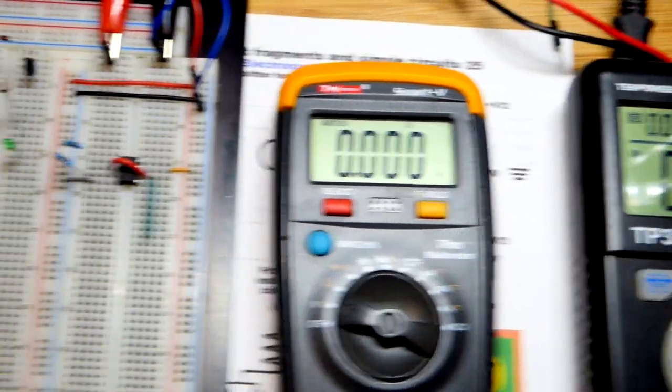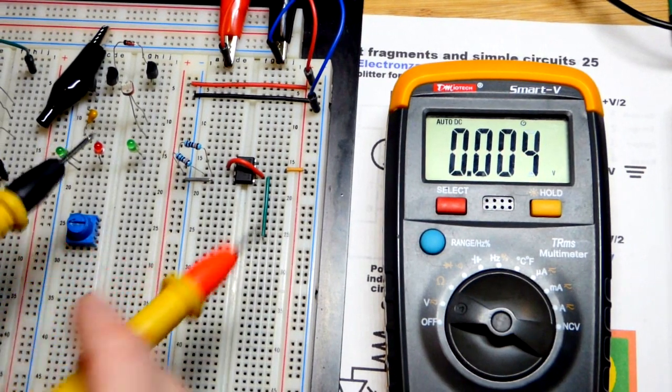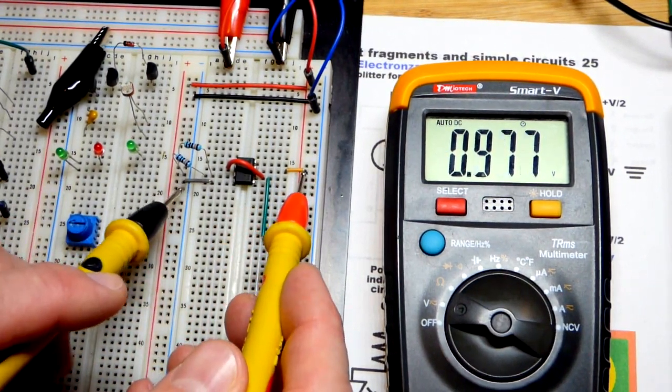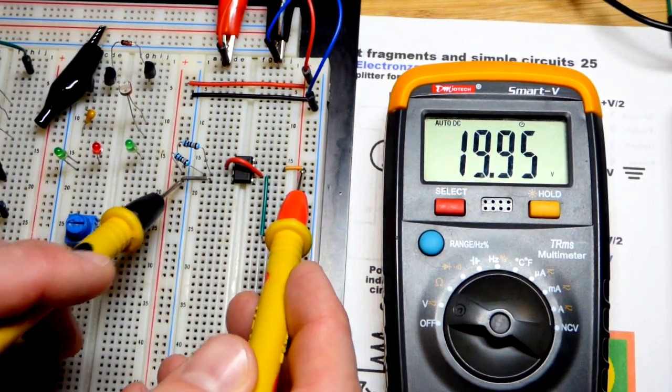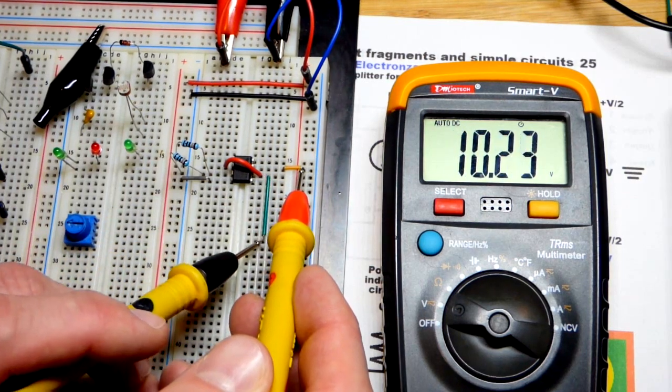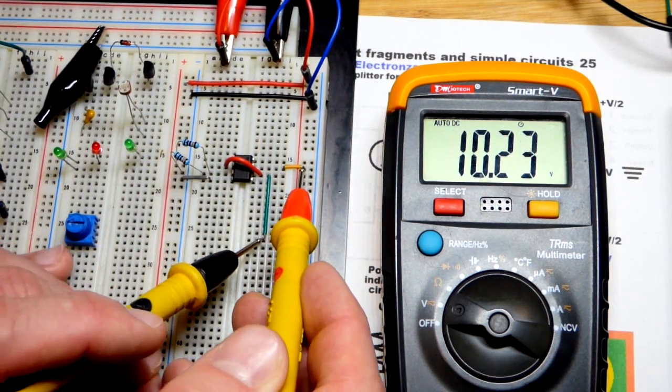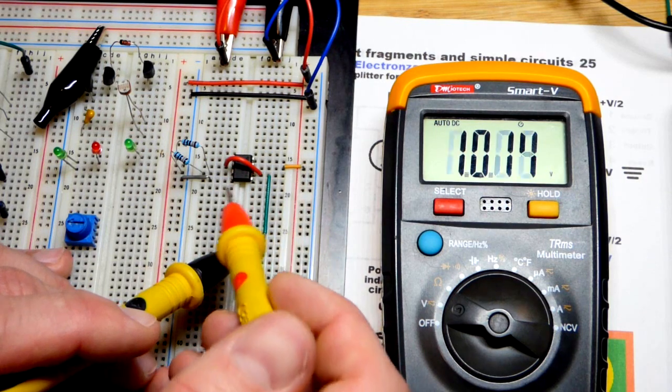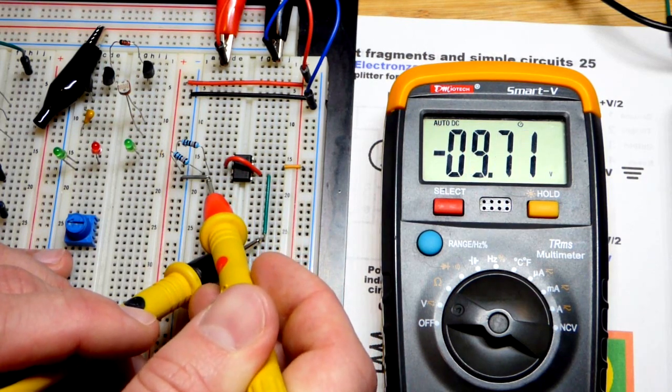At 20 volts, we can see that we first check the rail and we got 20 volts. But in relationship to ground, our zero volt reference point, we got 10 volts and negative 10 volts.